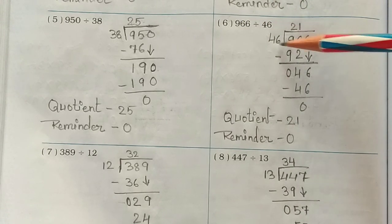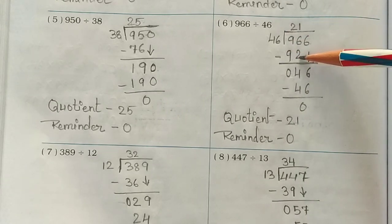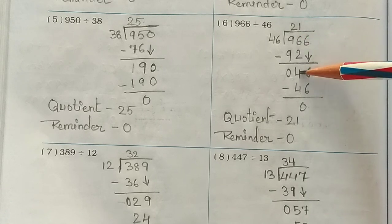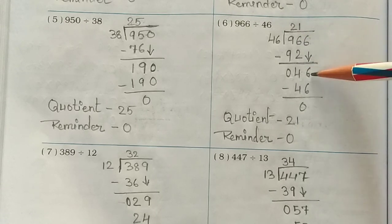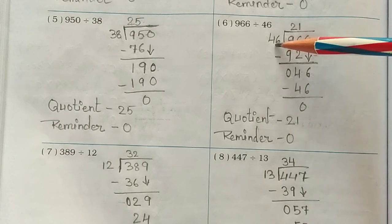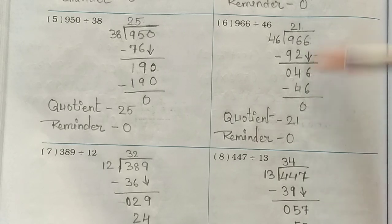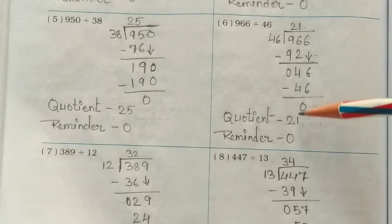Sixth number: 966 divided by 46. Write 46 here. 46 twos are 92 — subtract from 96 and you get 4. Bring down the 6 to get 46. 46 ones are 46, so zero remainder. Write the answer here — it is 21.